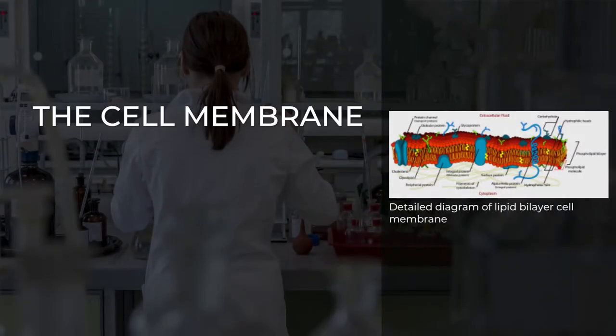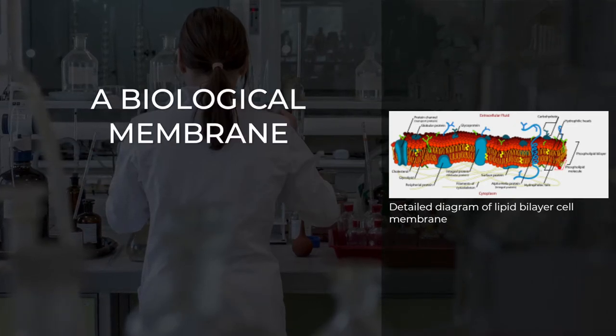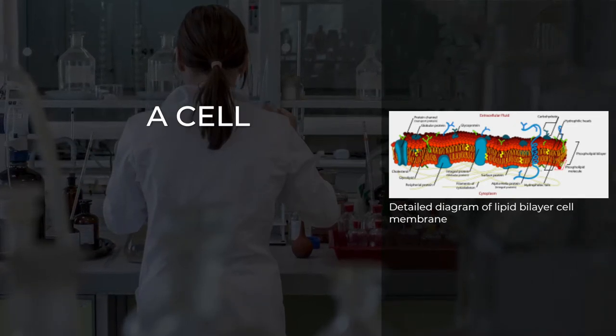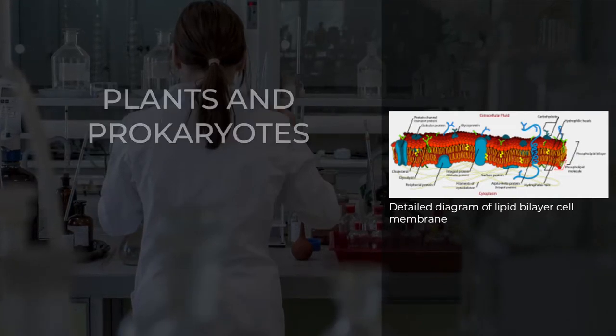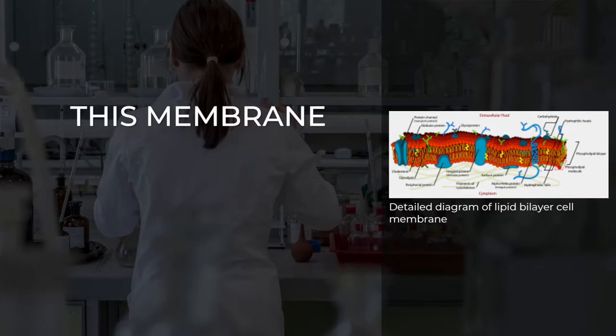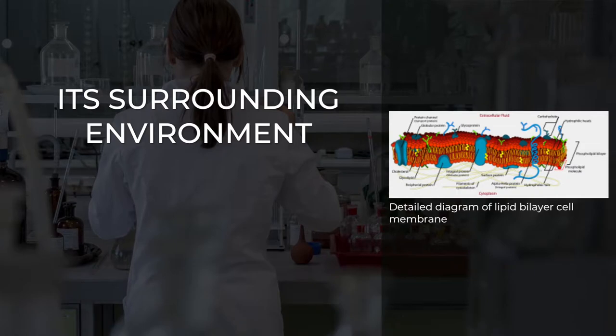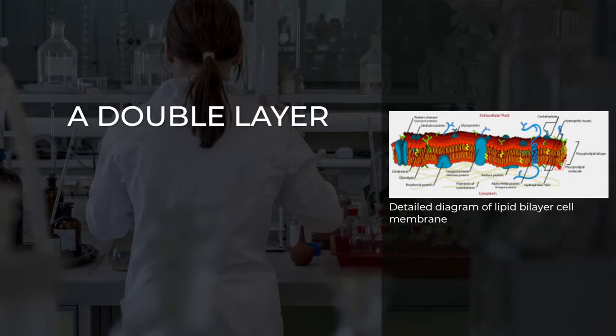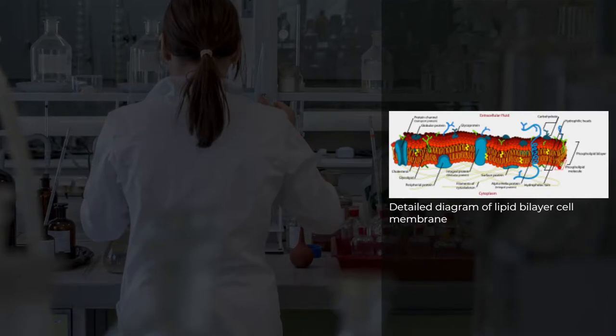The cell membrane, or plasma membrane, is a biological membrane that surrounds the cytoplasm of a cell. In animals, the plasma membrane is the outer boundary of the cell, while in plants and prokaryotes it is usually covered by a cell wall. This membrane serves to separate and protect a cell from its surrounding environment, and is made mostly from a double layer of phospholipids, which are amphiphilic, partly hydrophobic and partly hydrophilic.